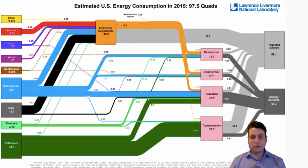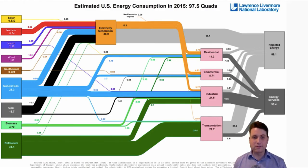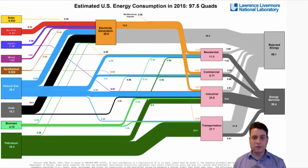Sankey diagrams are used very often to represent energy. As an example, this is kind of the ultimate Sankey diagram for the United States — it shows the total US energy consumption, with different sources of energy going into different parts of the economy and society, and where the energy goes after as well.